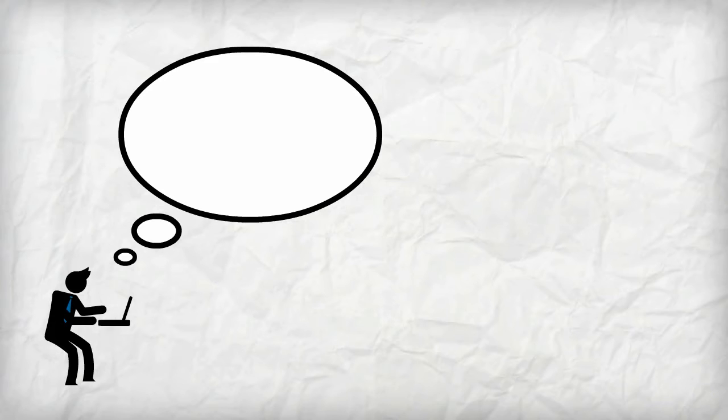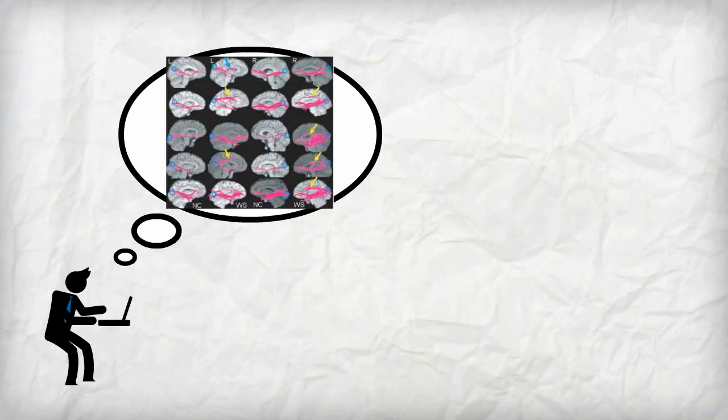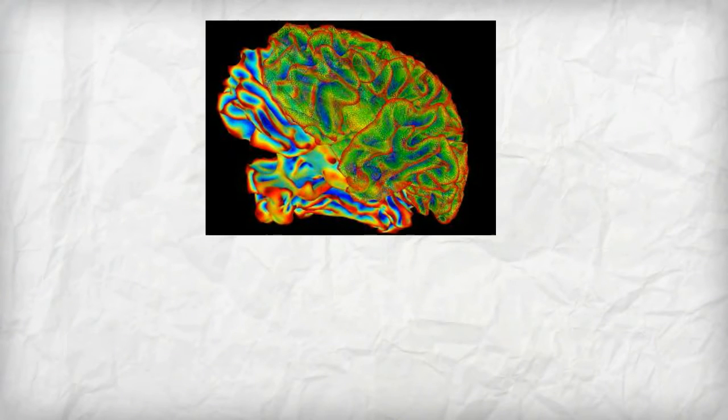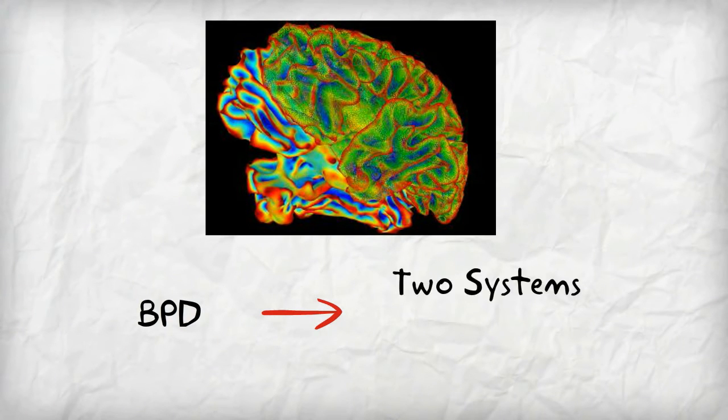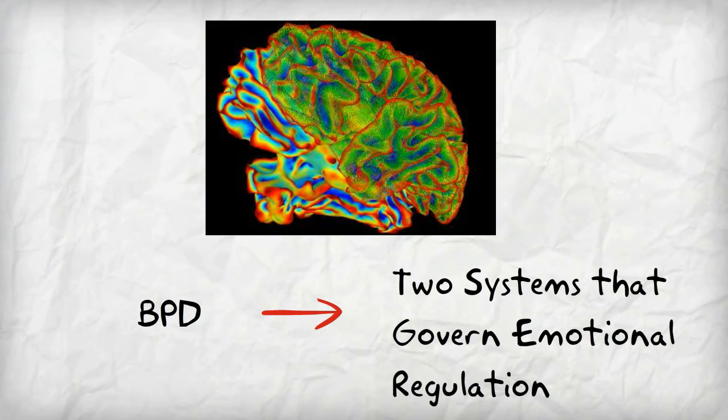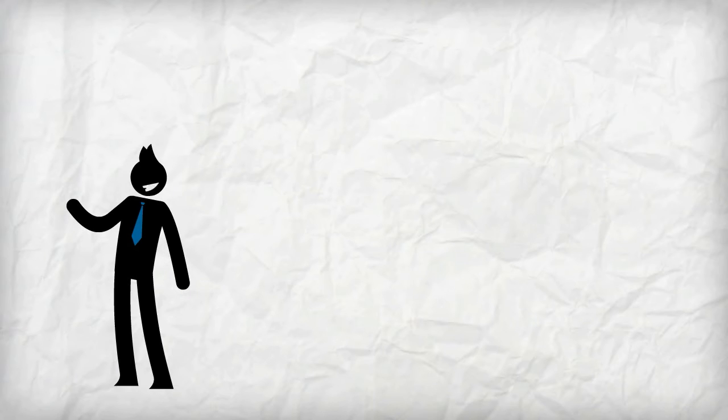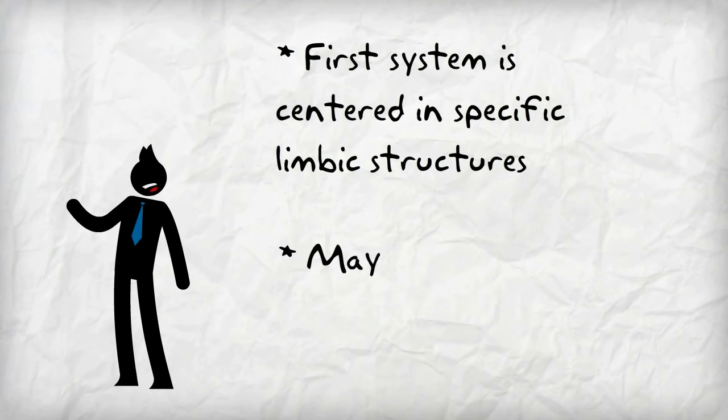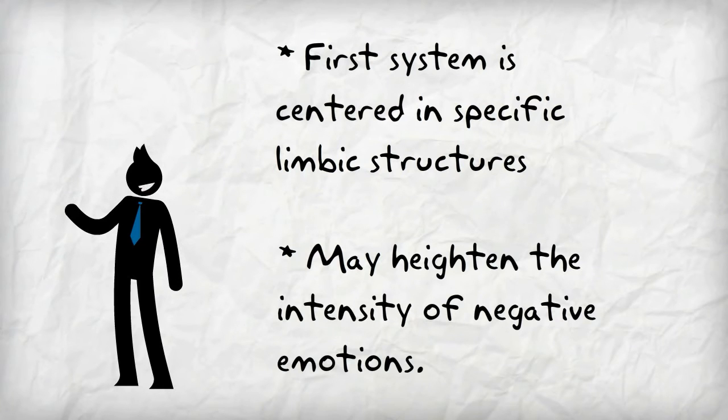When trying to understand mental illnesses, it helps to start with the brain. Recent neuroscience research by Dr. Anthony Ruoco and colleagues published in the Journal of Biological Psychiatry suggests that BPD stems from dysfunction in two of the neural systems that govern emotional regulation. As described in the article, the first system is centered in specific limbic structures and may heighten the intensity of negative emotions.